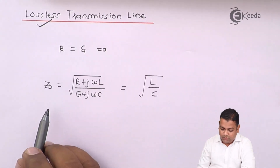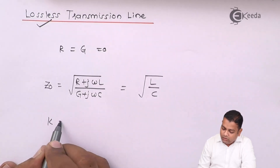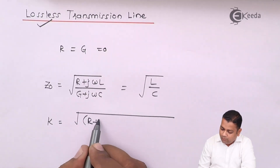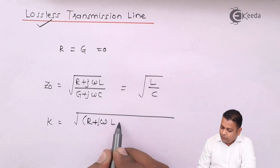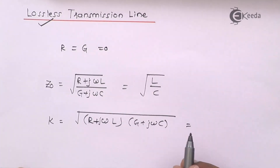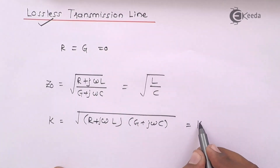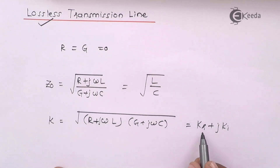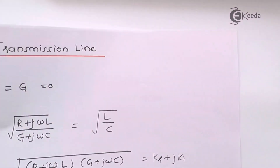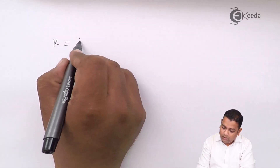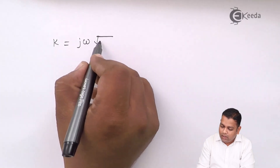After characteristic impedance, the propagation constant K is given by the square root of the product of the two brackets: (R + jωL) and (G + jωC). This has a real part K_R and an imaginary part K_I. For the lossless transmission line, the propagation constant K simplifies to j·ω·√(LC).